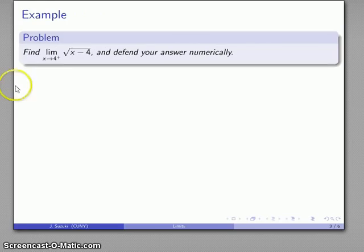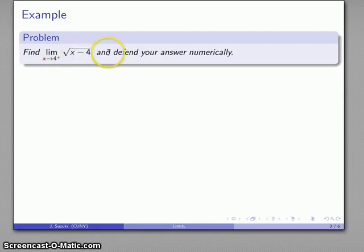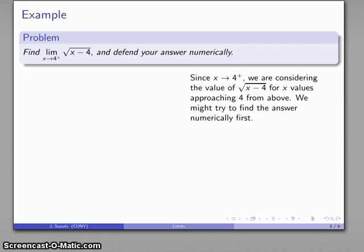For example, let's find the limit as x approaches 4 from above of the square root of x minus 4, and let's defend our answer numerically. Here we're approaching 4 from above, so we want to consider what happens to sqrt(x − 4) for x values getting close to 4 but always staying above 4.